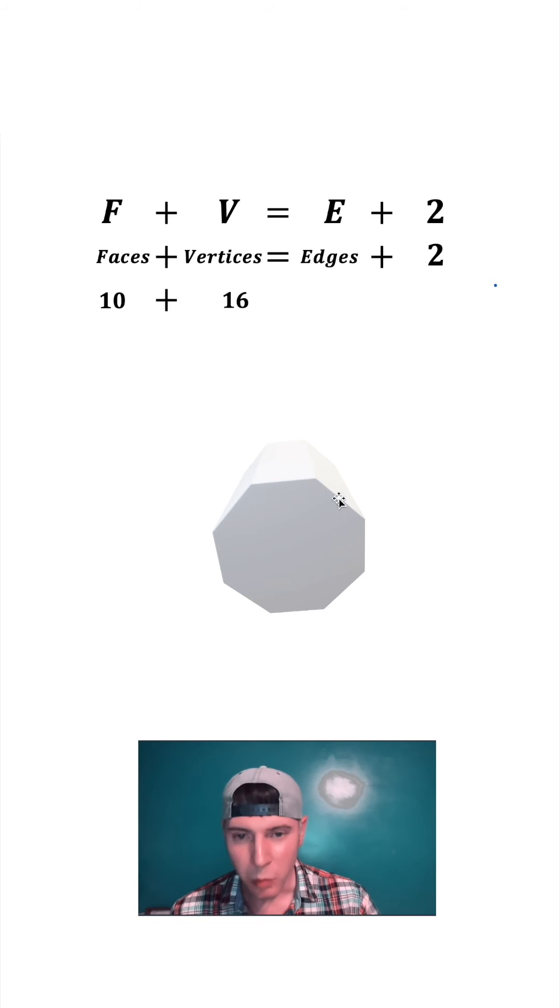Last, let's count the edges. We have one, two, three, four, five, six, seven, eight edges on the bottom. One, two, three, four, five, six, seven, eight edges around the middle, and eight edges on top. So we have a total of 24 edges.